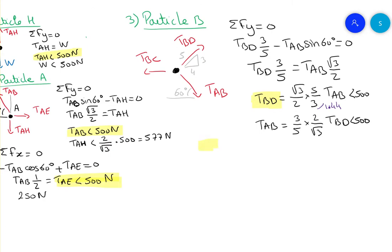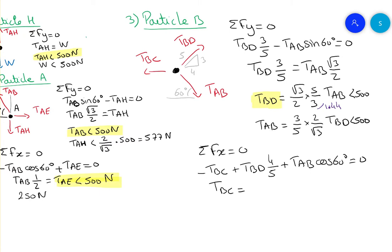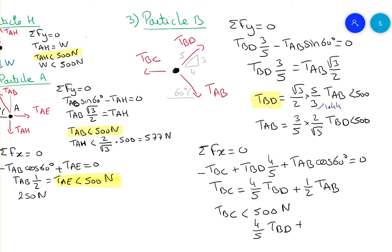Sum of forces on X equals zero: minus TBC plus TBD times 4/5 plus TAB times cosine 60 equals zero, so TBC equals (4/5) TBD plus (1/2) TAB. We need TBC less than 500 N, so we need (4/5) TBD plus (1/2) TAB less than 500 N. This looks like the most crucial equation because TBC balances the two other forces.